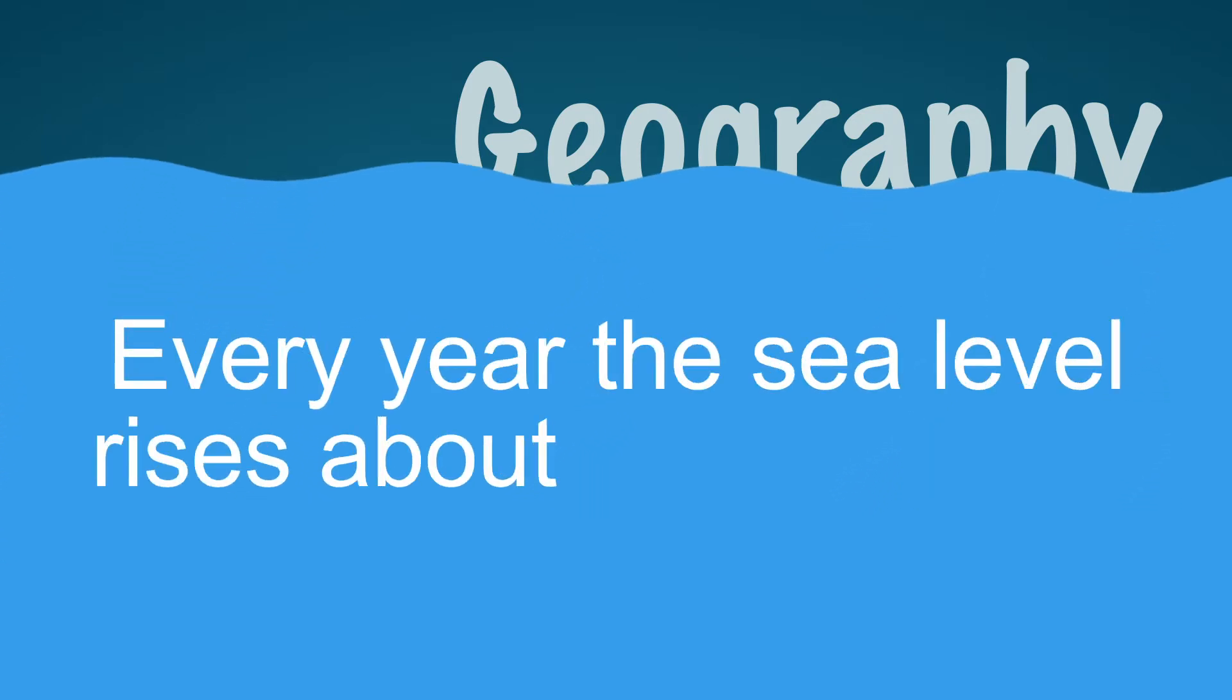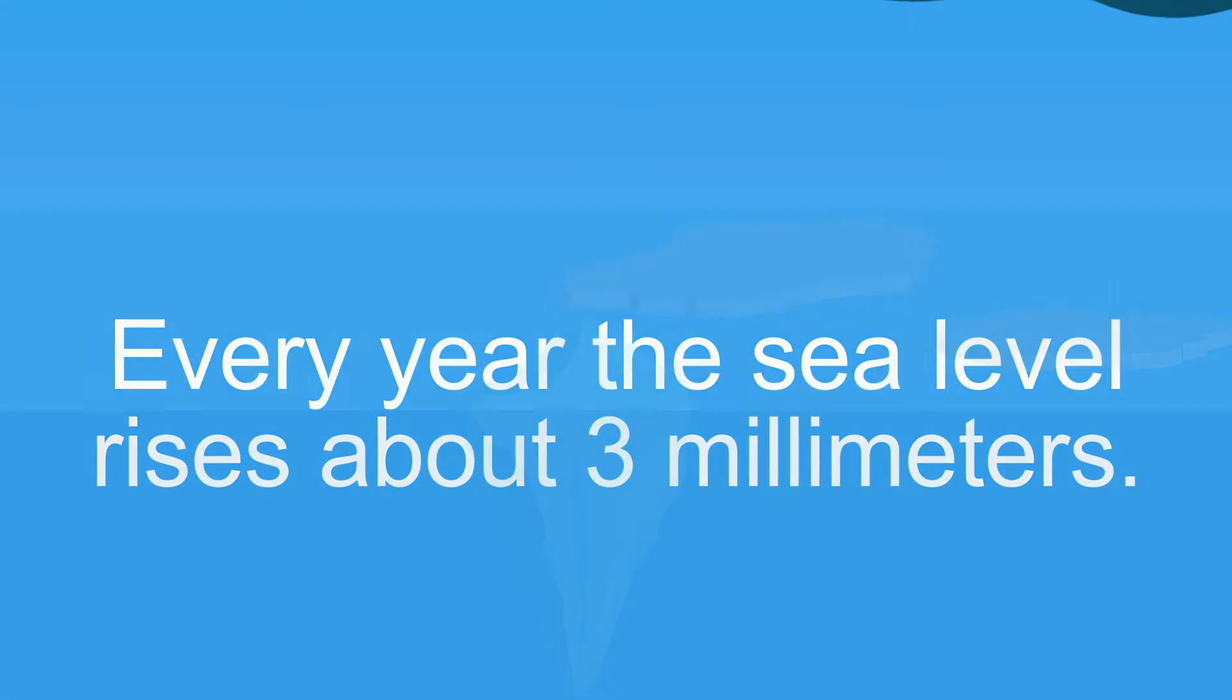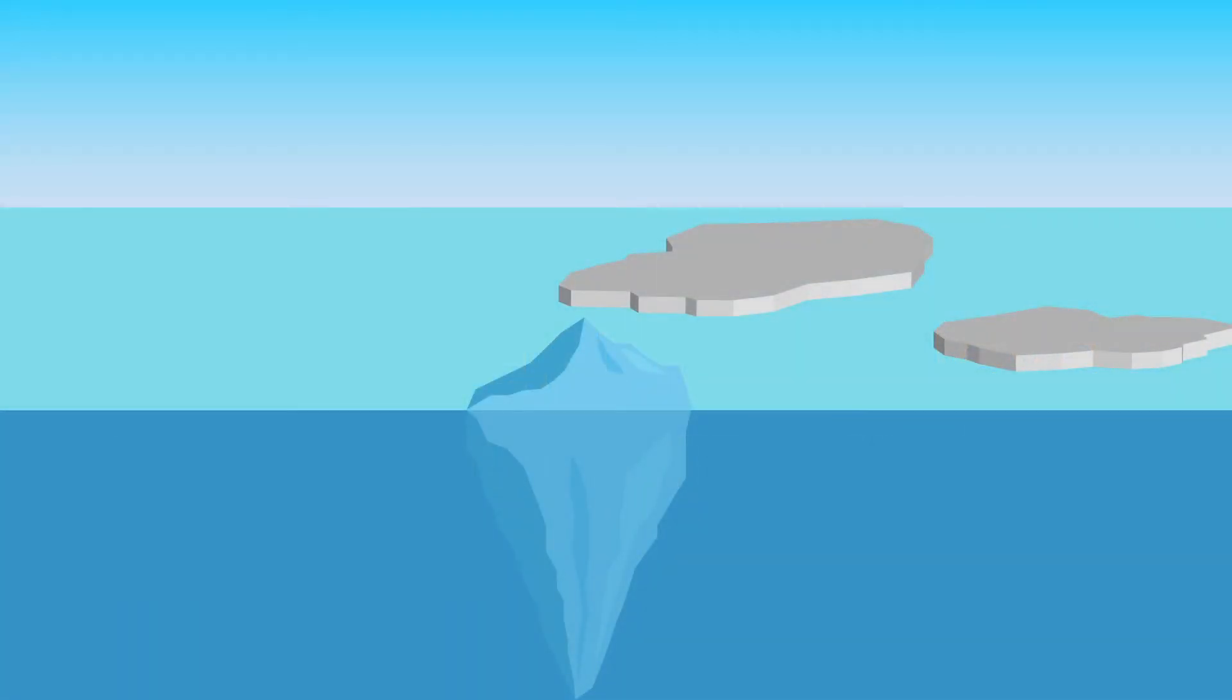Every year the sea level rises about 3 millimeters. This is mainly caused by melting ice. Let's take a closer look at melting sea ice.